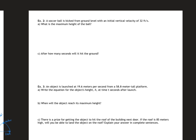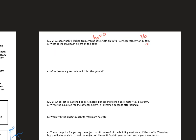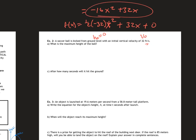Example two: a soccer ball is kicked from the ground, so h-sub-zero equals zero. Initial velocity v-sub-zero is 32 feet per second. Since we're talking feet per second, I write the equation: f(x) equals one-half times negative 32 times x squared plus 32x plus 0. Simplifying, that gives me negative 16x squared plus 32x, and that is the equation I'll be working with.